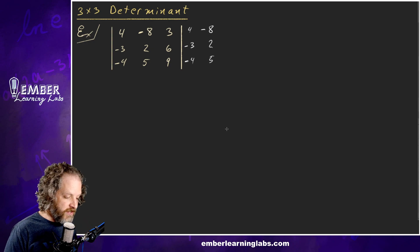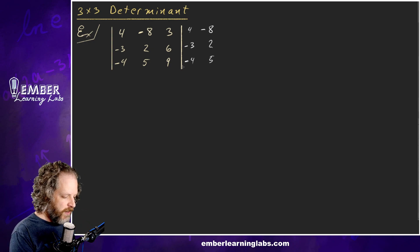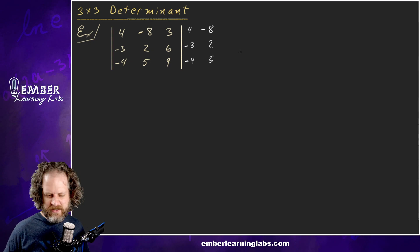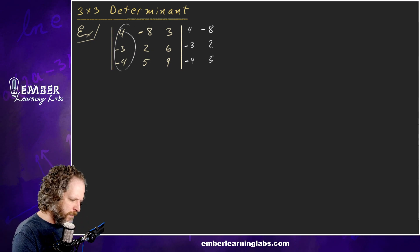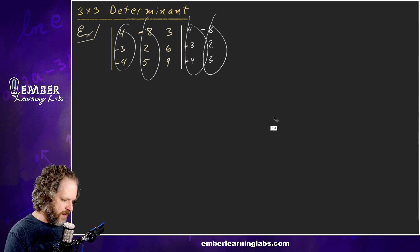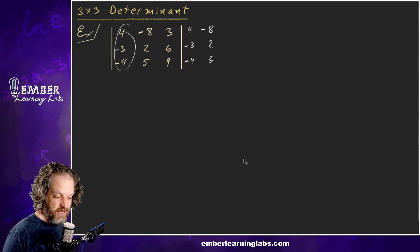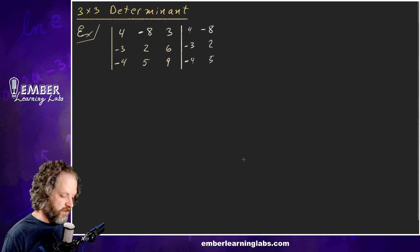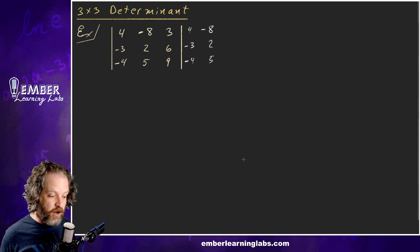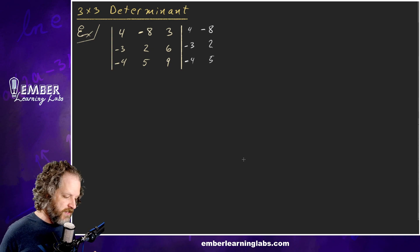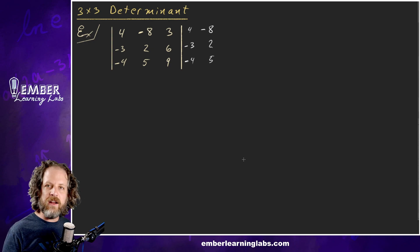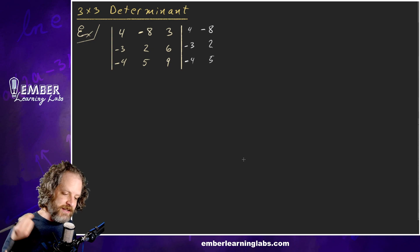What we do is rewrite the first two columns. That's the first step — easy peasy. Just take the first column, put it there; that column, put it there. Don't forget to make your signs right — that's an easy place to make mistakes. Then you're going to do basically the same thing.